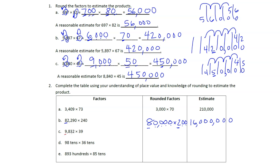For (c), we have 9,832 × 39. Both factors round up — 9,832 rounds to 10,000 and 39 rounds to 40. One times four is four, and we multiply by ten five times — four times 100,000 — giving us 400,000.